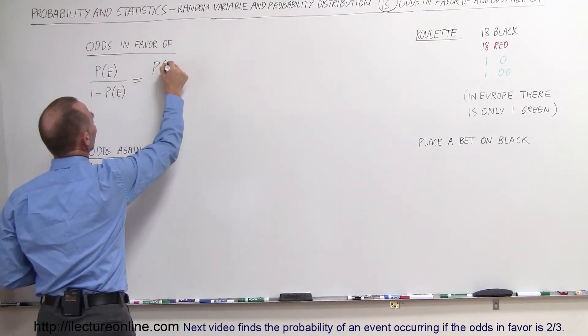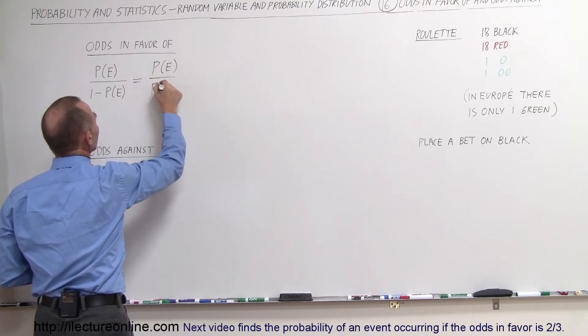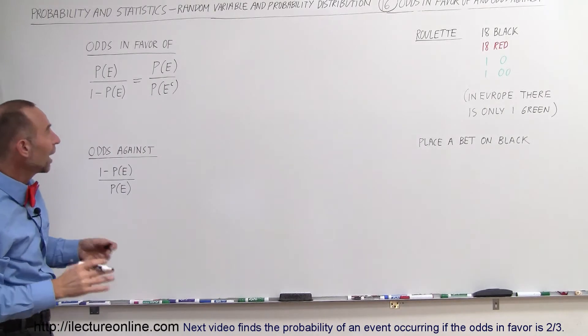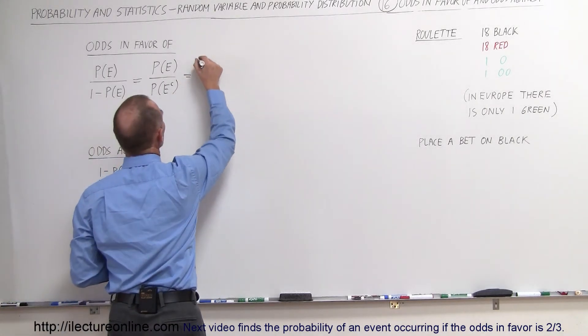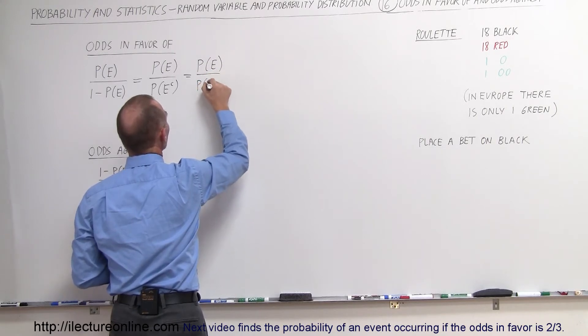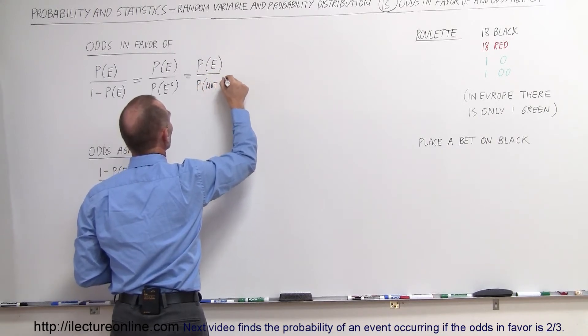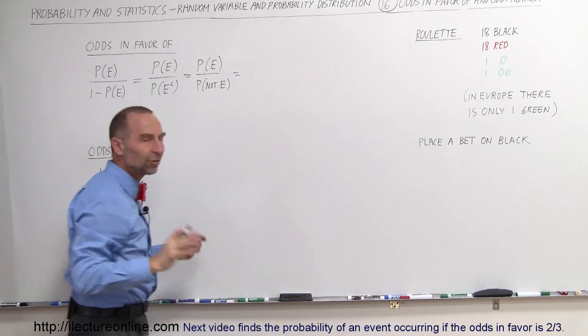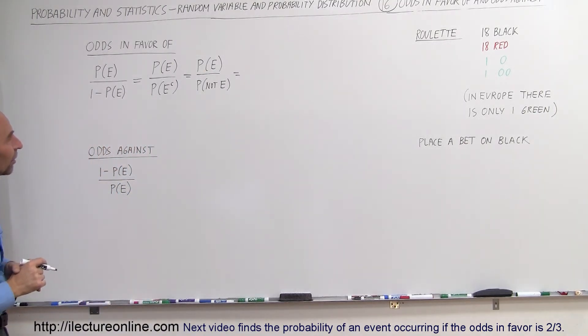We can say this is the probability of the event divided by the probability of the complement of that event, so the event not occurring. Another way of writing that is the probability of the event divided by the probability of not the event. So there's different ways of writing it, whatever makes most sense to you, but that maybe helps us understand it.